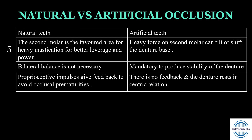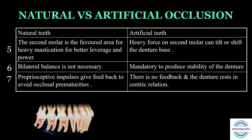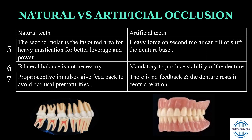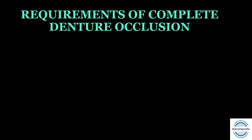The premolar area — the center of the denture — can take force well. Bilateral balance is not necessary and acts as an interference in natural teeth, but bilateral balance is mandatory to produce denture stability. If there is any occlusal prematurity in natural teeth, proprioceptive impulses give feedback, but in a denture there is no feedback. The denture rests in centric relation, so if there is any occlusal prematurity the patient will often complain that the denture becomes loose when chewing.